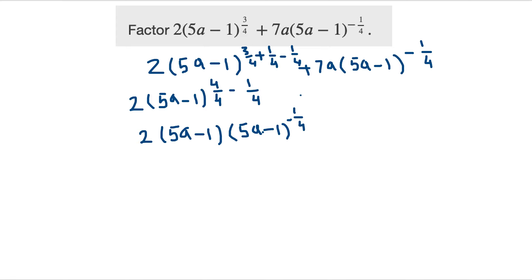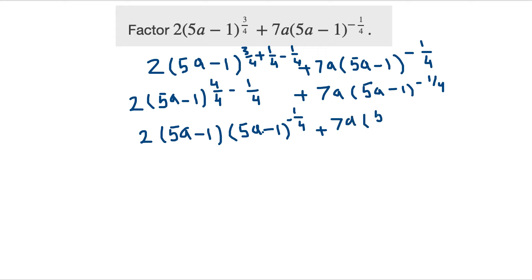The second part of the expression — 7a times (5a minus 1)^(-1/4) — I didn't change. No operation was needed there. The operation was only applied to the first term. So I just rewrite it and follow this step, keeping the exponent minus 1 over 4.